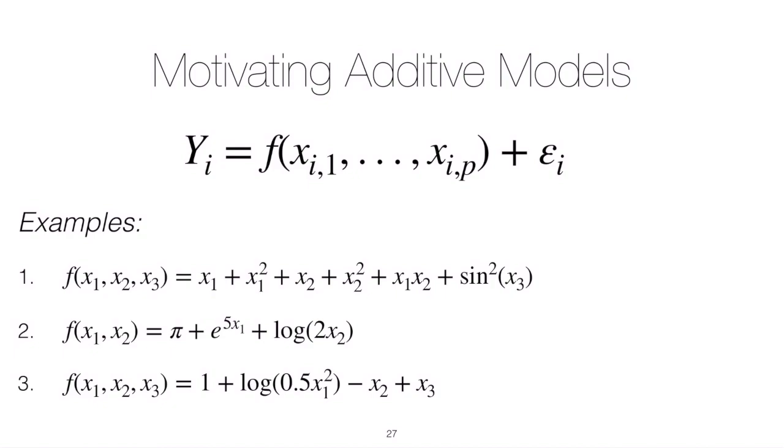Suppose that we have more than one predictor. A somewhat general form of the model might look like this: our response Y_i is equal to some function of our predictors, not just a function of one predictor but a function of many. It's a function that takes in several variables but gives an output of just one variable, plus an error term, making the standard assumptions on the error term like it's normally distributed with mean zero and some constant variance for all i.